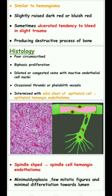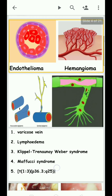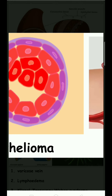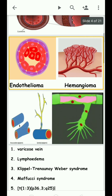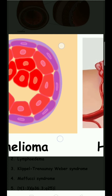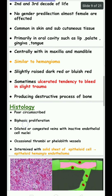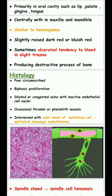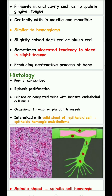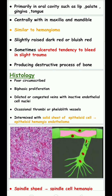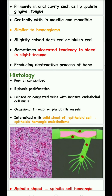Hemangioendothelioma is poorly circumscribed with biphasic proliferation — meaning proliferation of endothelial cells both inside the lumen and outside. There is an increasing number of endothelial cells in the lumen. The vessels may appear dilated or congested with inactive endothelial cell nuclei. Occasionally, thrombi or phleboliths — which are calcified thrombi — are also seen within the vessels.